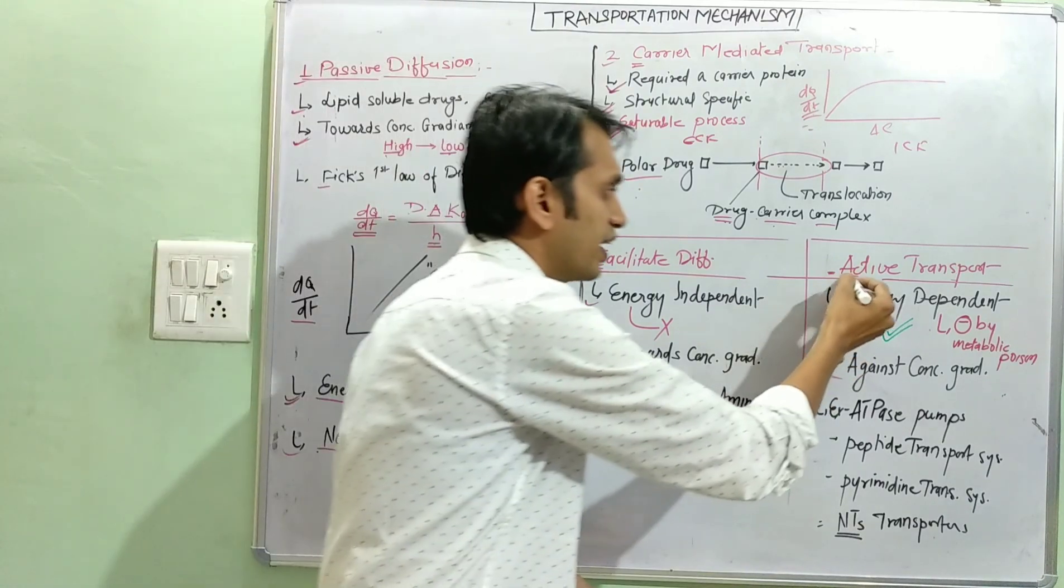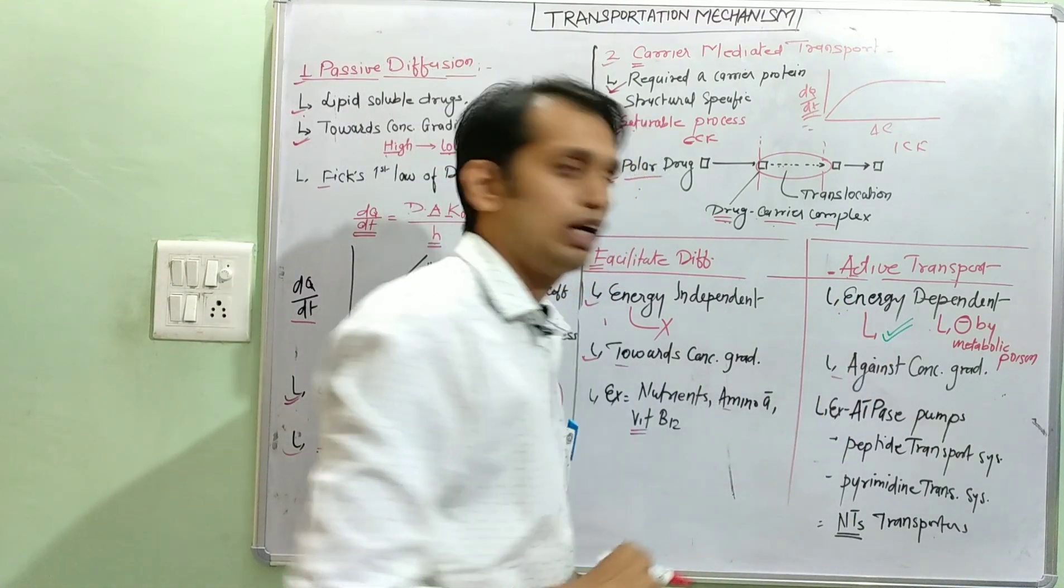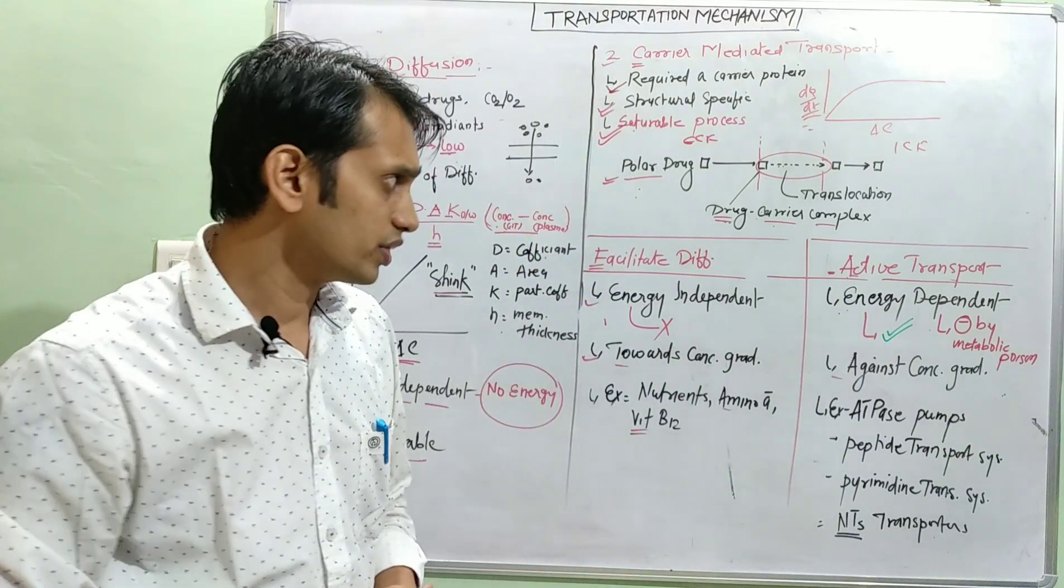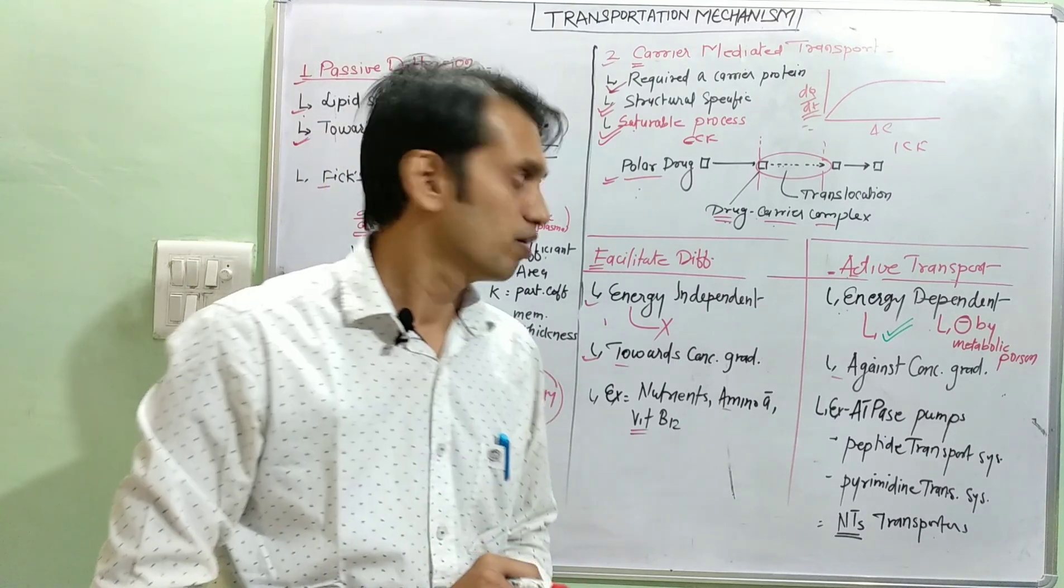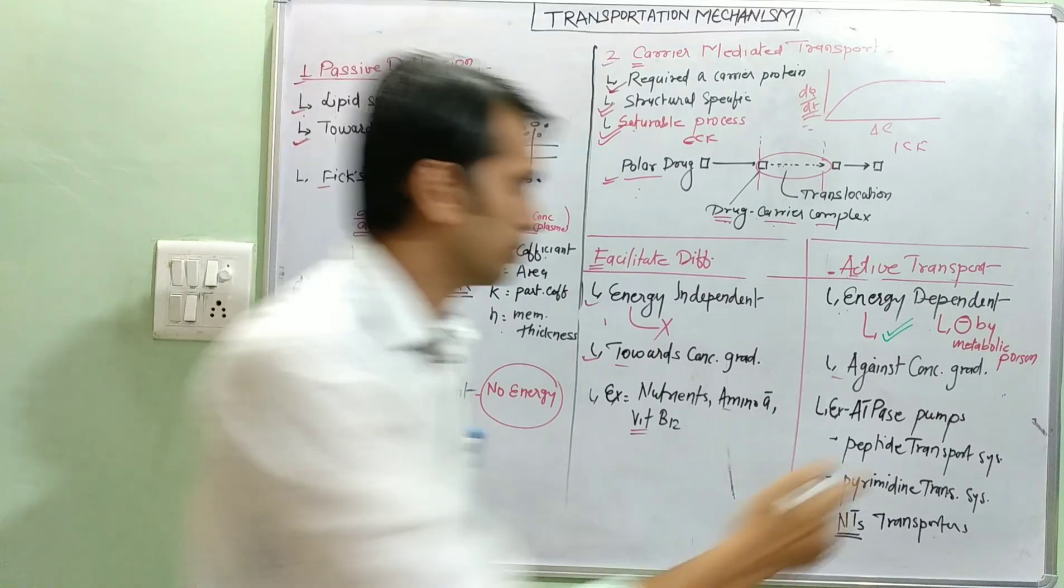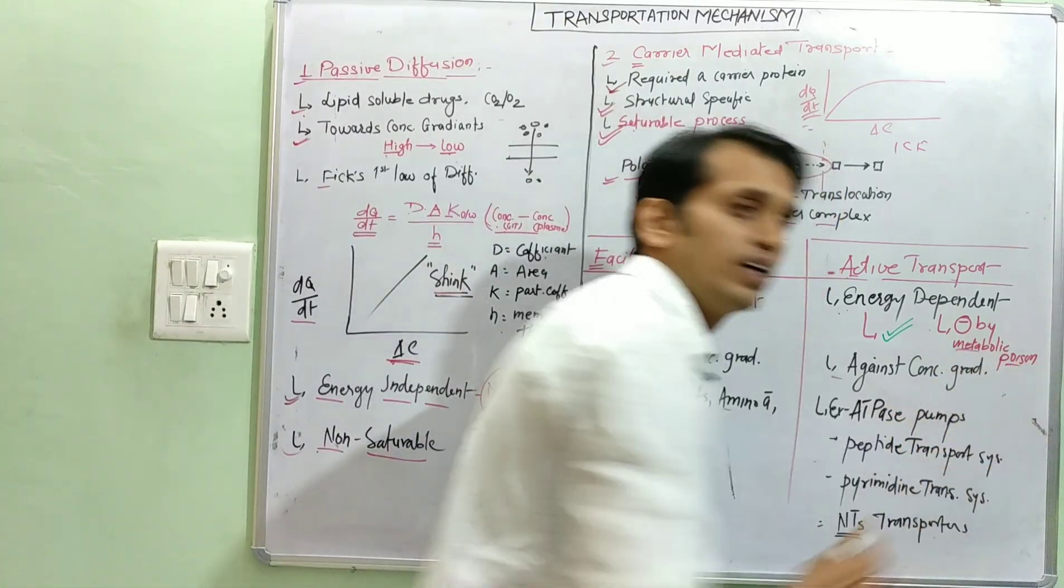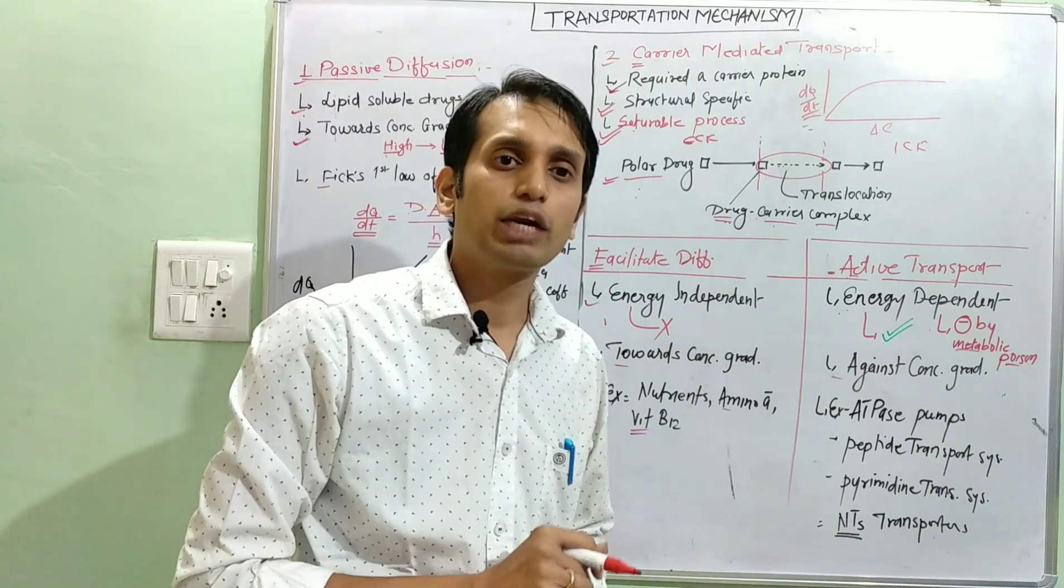And second is the active transport system. It is energy dependent, means it requires energy for the transportation of a drug across the biological membrane, and therefore it is inhibited by metabolic poisons, those which inhibit cellular respiration or ATP production.